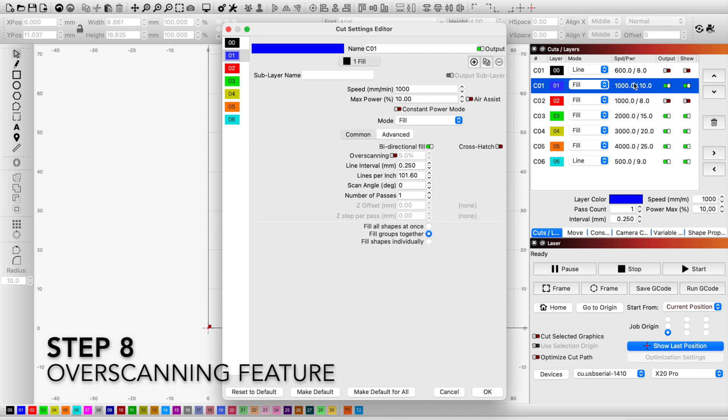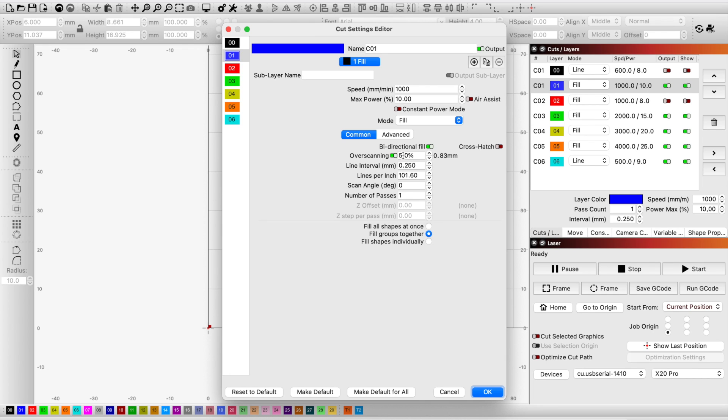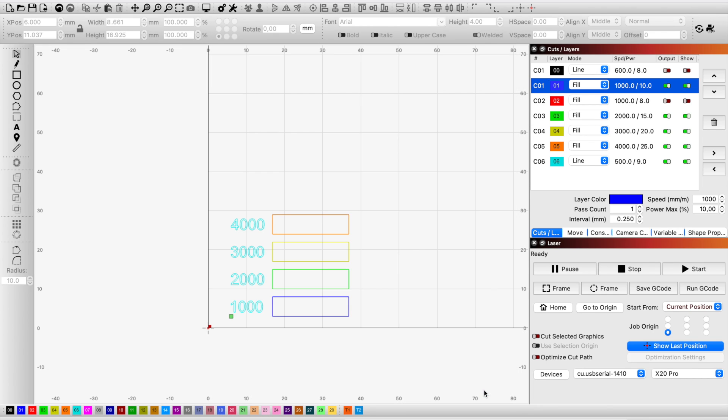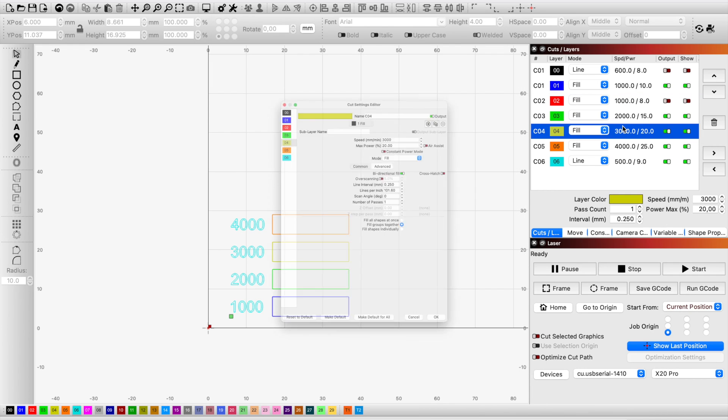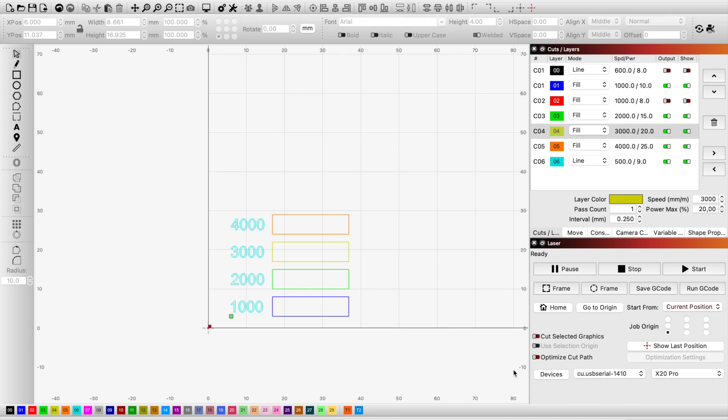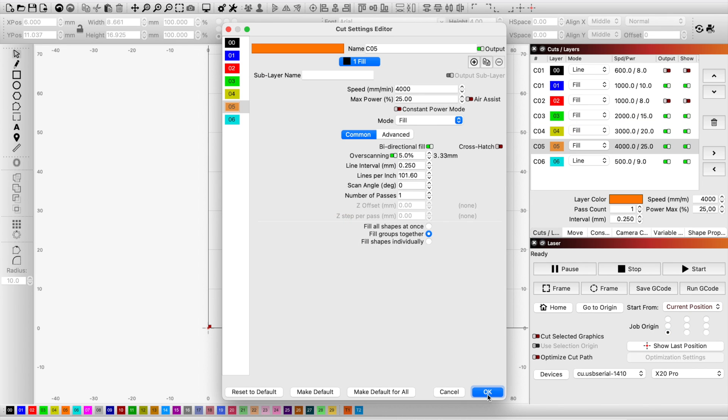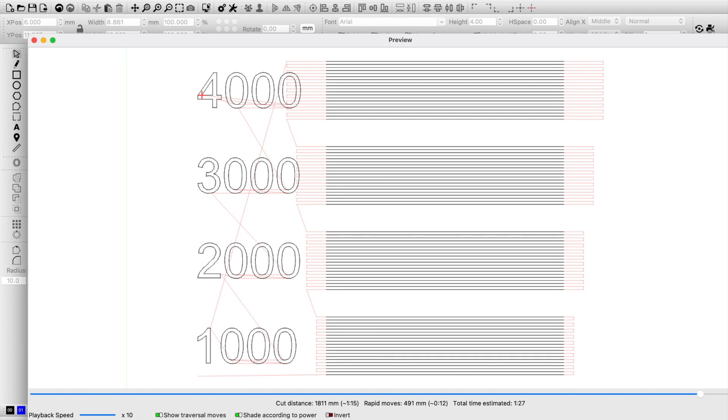Next I'm going to test the over-scanning, which is the option to move the laser head for each line to exceed the actual length of the engraving line. The value of over-scanning is entered as a percentage, which calculates an extra movement of the laser head in percent of one second. 3000 millimeter per minute equals 50 millimeter per second. 5% over-scanning gives 2.5 millimeters. I change all the layers to 5% over-scan and run the file again.